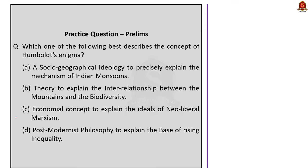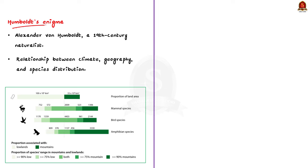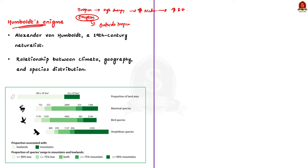Which one of the following best describes the concept of Humboldt's Enigma? The world's tropical areas receive more energy from the sun because of the Earth's angle of inclination, making them have greater primary productivity, ecological niches, more complex ecosystems and greater biological diversity. However, the proponents of Humboldt's Enigma hold that many areas outside the tropics are also highly biodiverse — for example, mountain regions.